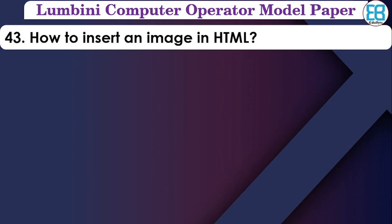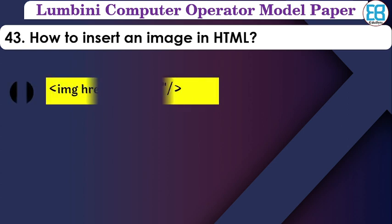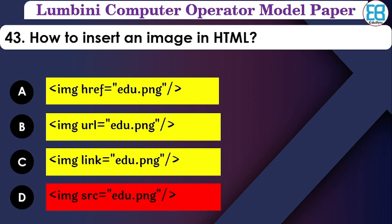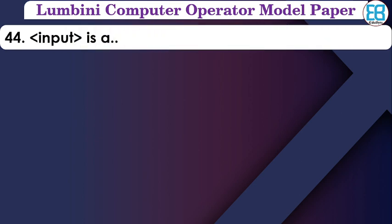How to insert an image in HTML? The syntax uses the image tag with the src attribute — the source (src) attribute is used to specify the image URL. The correct option uses the src attribute to name and link the image source.